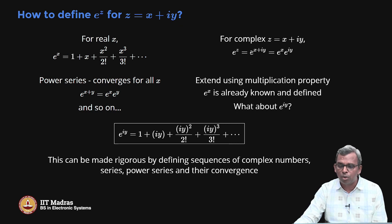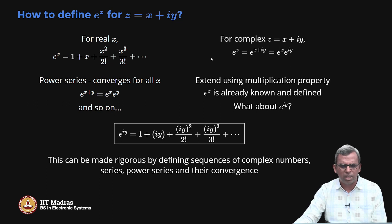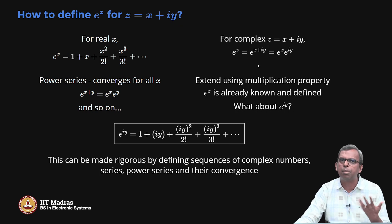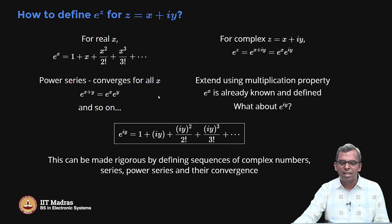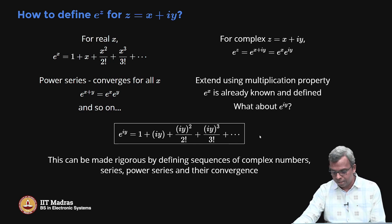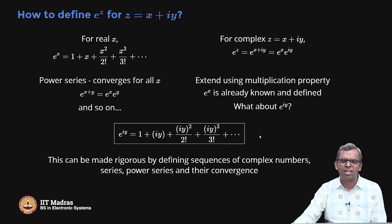In fact, instead of putting iy alone, you can put x + iy directly into the series expansion instead of x and get the same answer. That is exactly the multiplicative property of the exponential function, and that proof goes through in the complex case as well — everything works very cleanly in an exactly analogous manner.